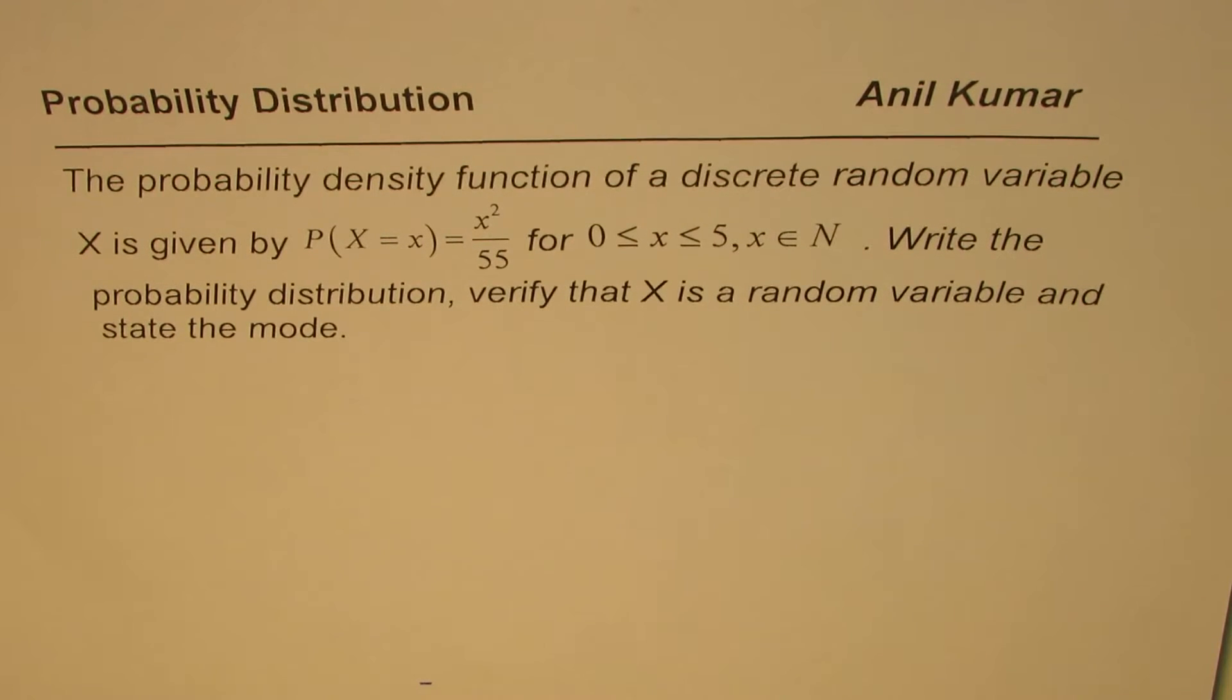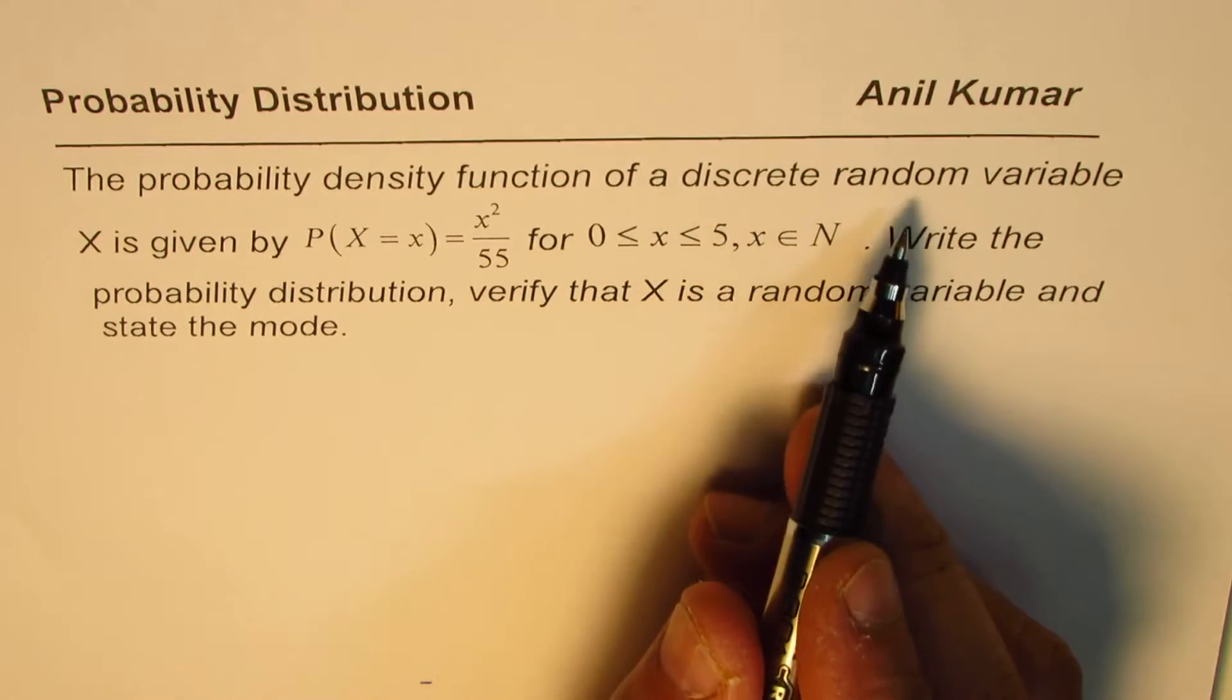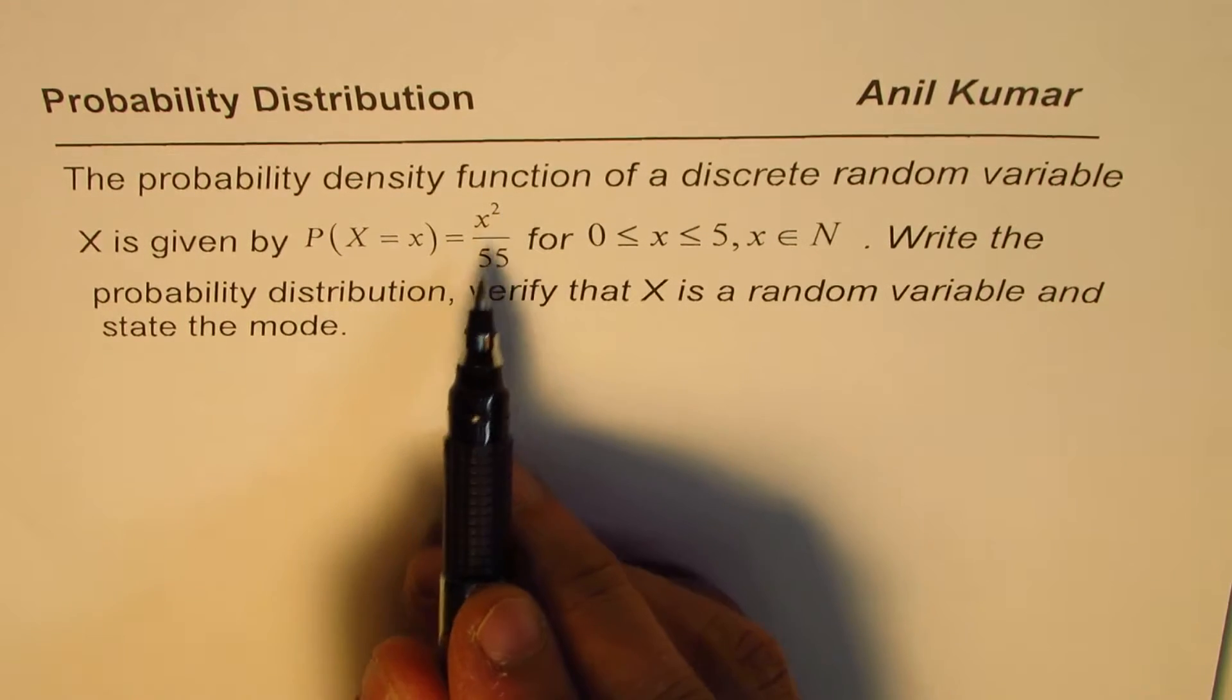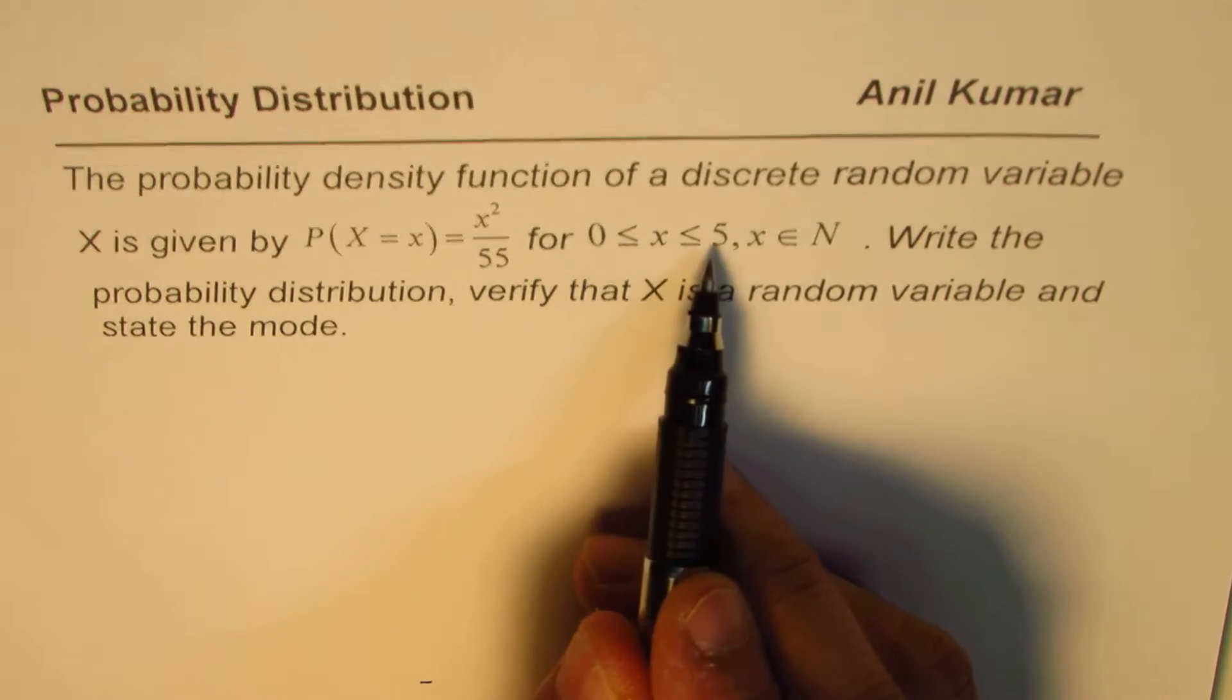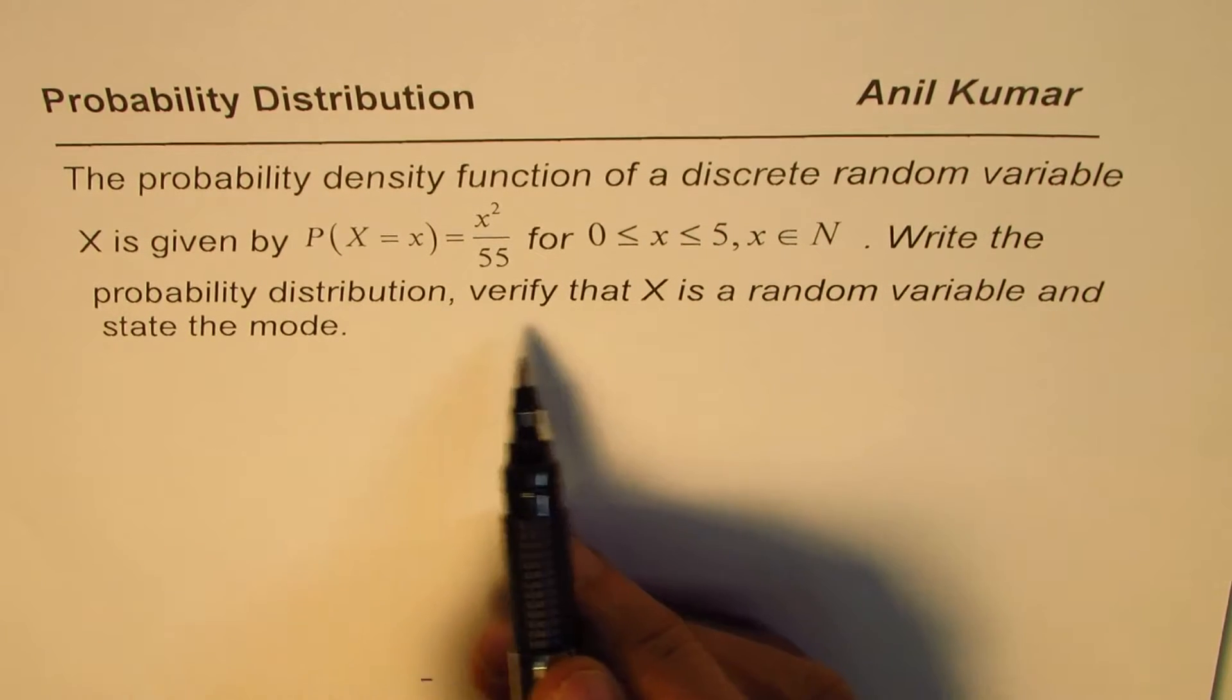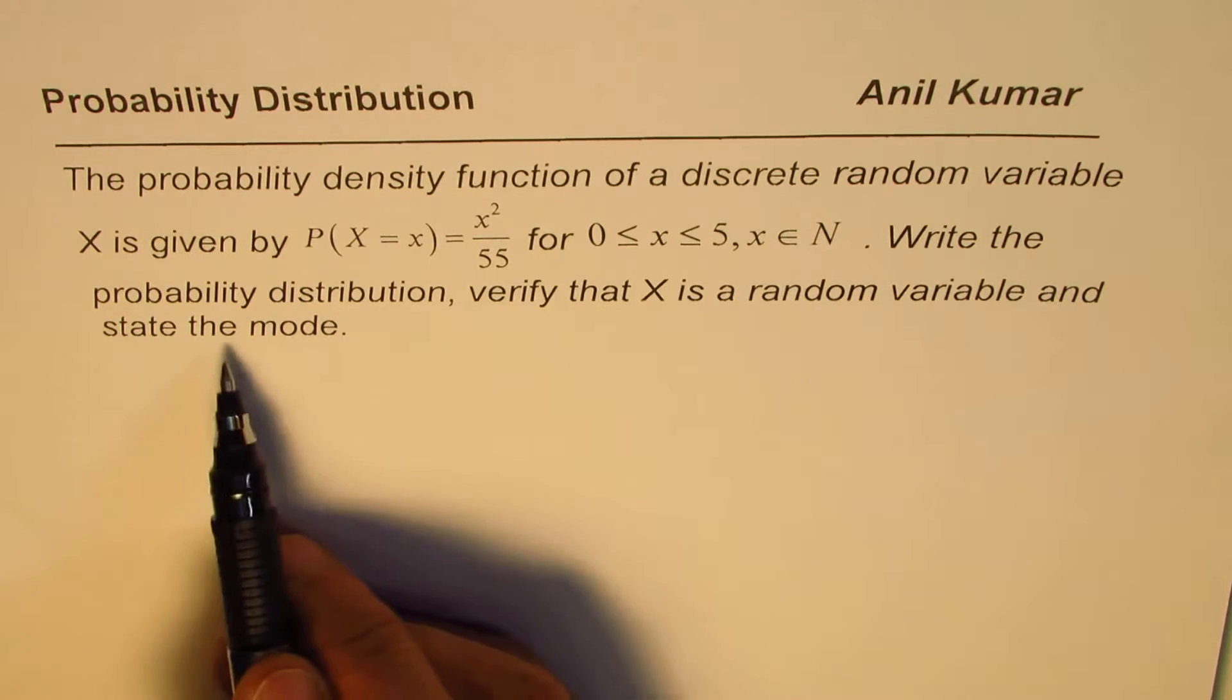I am Anil Kumar and here is a question relating to probability density of a function. The probability density function of a discrete random variable x is given by P(X=x) = x²/55 for x between 0 and 5, both included, where x belongs to the set of natural numbers. Write the probability distribution, verify that x is a random variable, and state the mode.